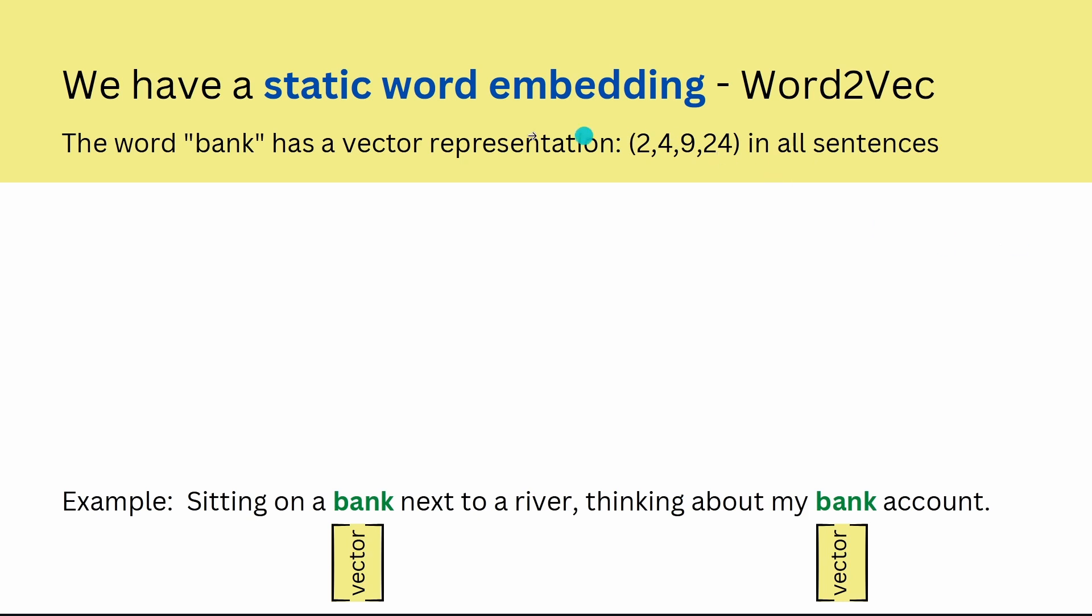I would like the explanation to start with a static word embedding. If you think about word2vec, we have a static word embedding. This means the word embedding, the vector of the word bank, has a vector representation like this for example in all the sentences. If you look at the example sitting on a bank next to a river, thinking about my empty bank account, you see that the word bank here and the word bank here have the exact same vector representation independent of the context.